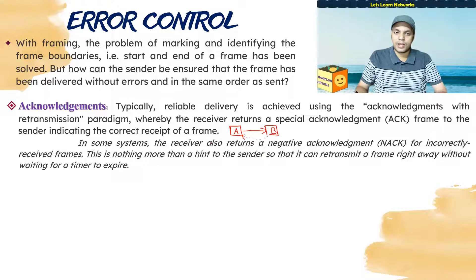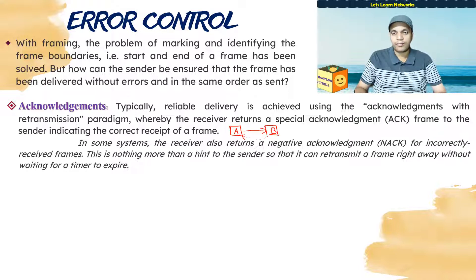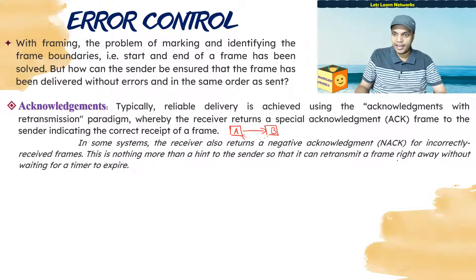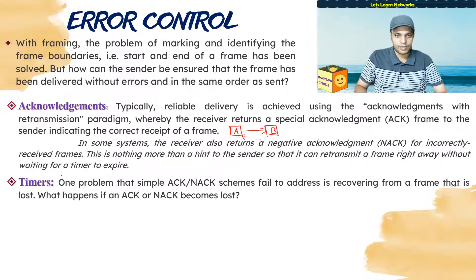In some systems, the receiver can also return a negative acknowledgement (NACK) if the frame was received but contains errors. Rather than waiting for A's timer to expire, B can immediately send a NACK for an incorrectly received frame, so A understands the frame contained errors and will retransmit right away. This is a hint to the sender to retransmit without waiting for the timer to expire. Acknowledgements are special frames sent by the receiver to confirm correct receipt.